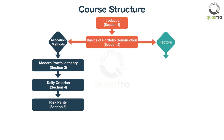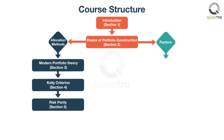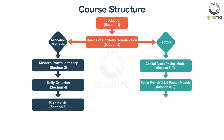You will learn about the factors that explain the price movements of securities. The first factor you will learn is Beta, and then you will learn to calculate the expected returns of an asset using the Capital Asset Pricing Model. After that, you will learn the Fama-French three-factor and five-factor models which improve the CAPM framework.